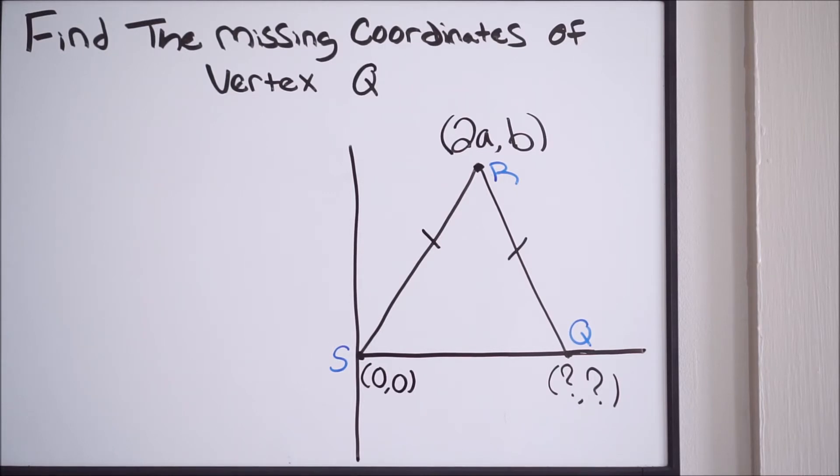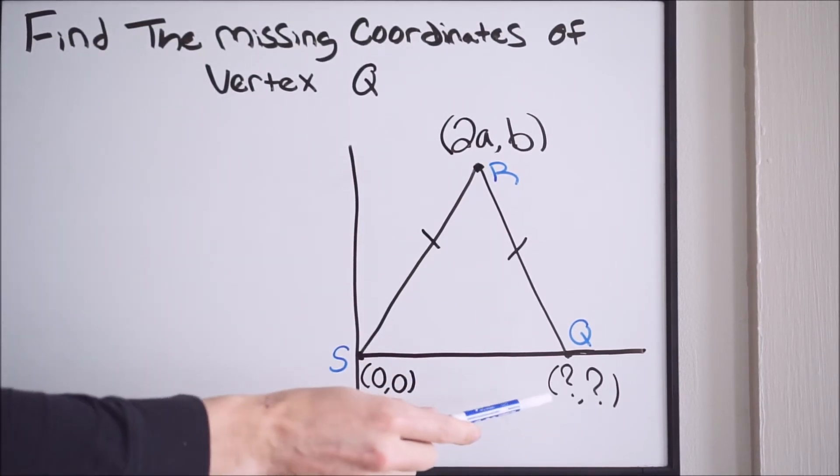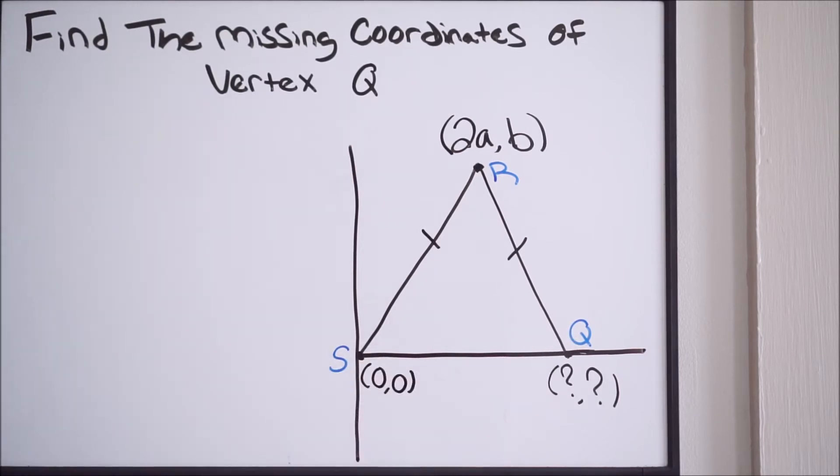We know it's an isosceles triangle because we have two congruent sides. So let's talk about how we're going to find these missing coordinates on vertex Q.